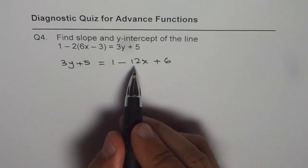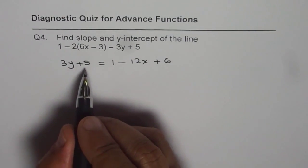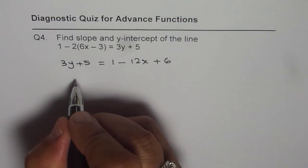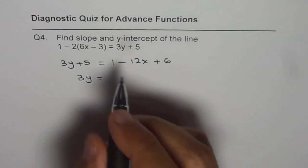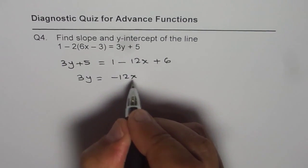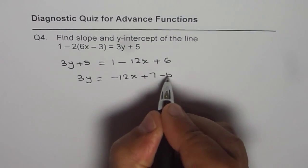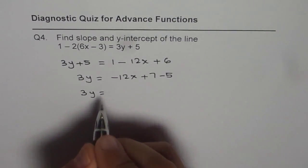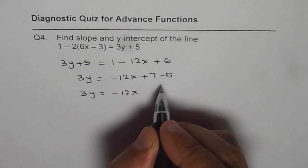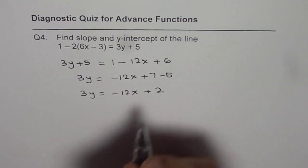Now bringing x and y, bringing all these constants on the right side, we get 3y equals 1 plus 6 is 7, so we get minus 12x plus 7 minus 5. So which is 3y equals minus 12x, 7 minus 5 is 2 plus 2.